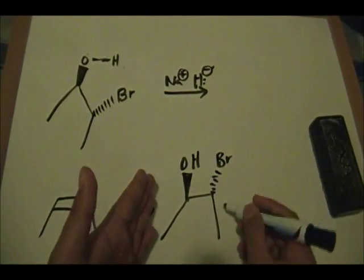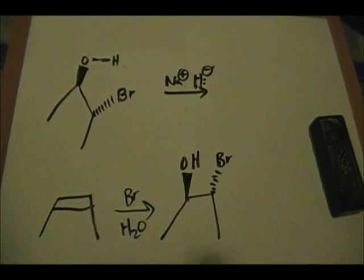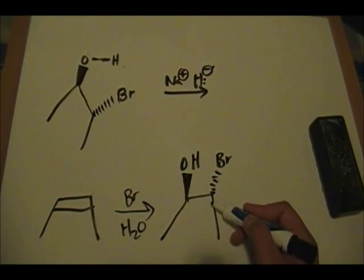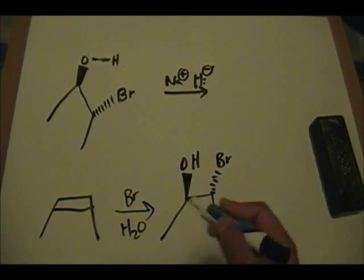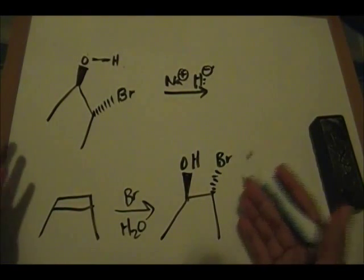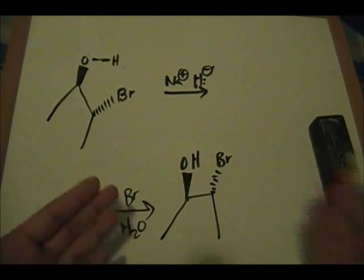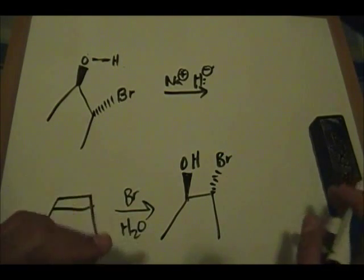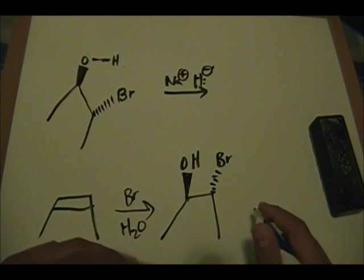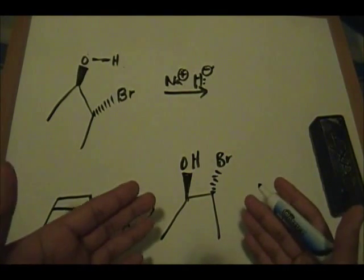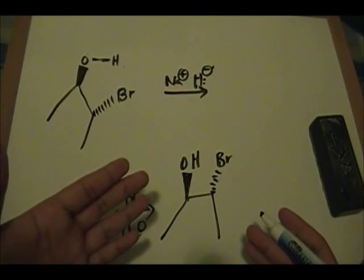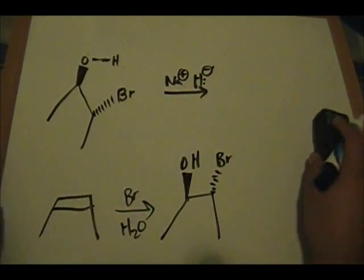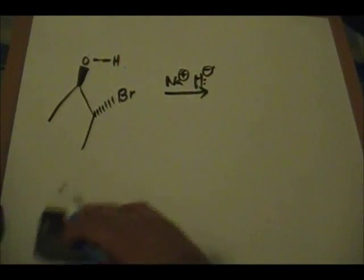If this was your starting material for the Williamson ether synthesis, it would not work because you have a secondary alkyl halide. This carbon attached directly to the bromine is attached to two different carbon groups. The preparation of the epoxide in this specific case would not work because instead of getting your SN2 style reaction mechanism, you would get an E2 elimination and not form your epoxide.